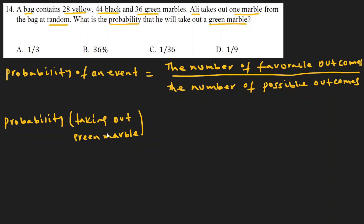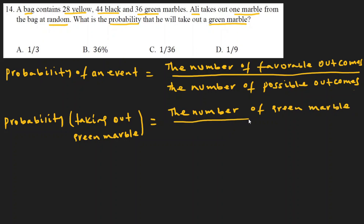The probability of taking out a green marble from the bag equals the number of favorable outcomes, which is the number of green marbles, divided by the number of possible outcomes, which is the total number of marbles in the bag.